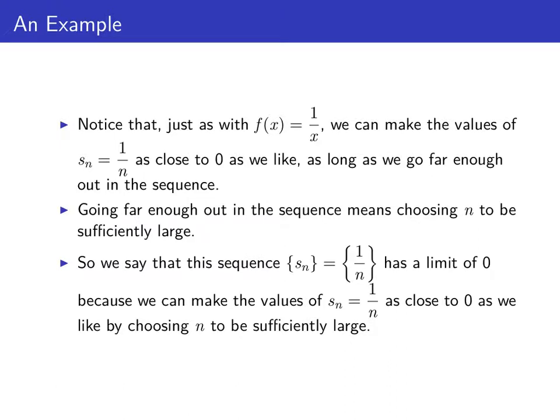So we can translate the idea of a limit of a continuous function to that of a sequence, by saying that our sequence, in this case 1 over n, has a limit of 0, because we can make the values of 1 over n as close to 0 as we like, by choosing n to be sufficiently large.